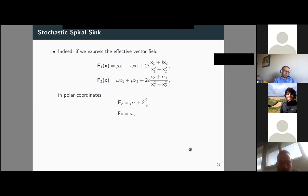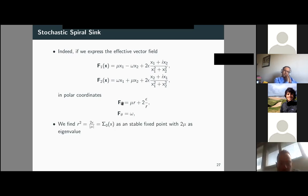This balance is visible when the effective vector field is expressed in polar coordinates: the fixed point of the radial equation corresponds exactly to the stochastic limit cycle, with lambda_Floquet as its stable eigenvalue.